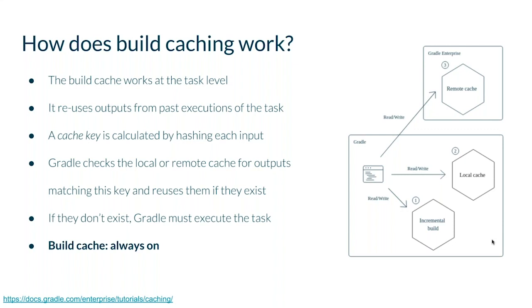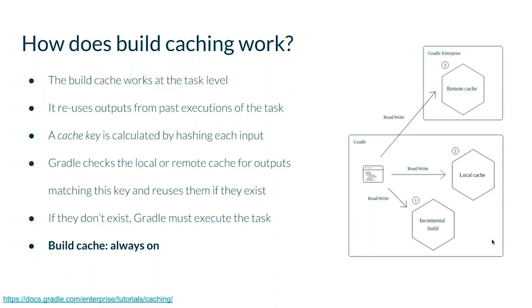Gradle then looks in the build cache — either the local or the remote build cache — and if it finds that cache key, that's a cache hit, and it takes those outputs and substitutes them into your build. If there's a cache miss, it has to execute the task, which takes longer. The final point: the build cache should always be on. There's never a scenario in which it makes sense to turn the build cache off. We want to have dry builds — don't build something twice if you can only build it once.